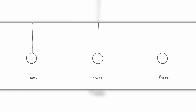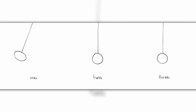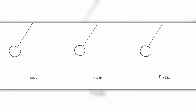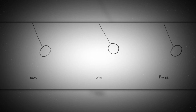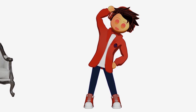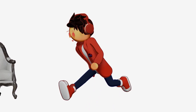Animating on 1s can make the animation feel smoother, while animating on 3s can make it more choppy. But why do this? What even is the point of animating at different frame rates? I believe there are two main reasons why the animators for Puss in Boots: The Last Wish chose to do this.